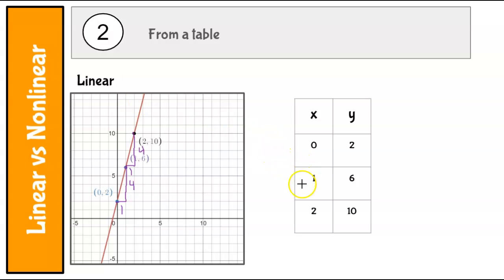And the same thing is true from the table. For every one that we go up, y is going up 4. So when I put my rise over my run, my change in y's over my change in x, I get 4, which is the same if I do these.